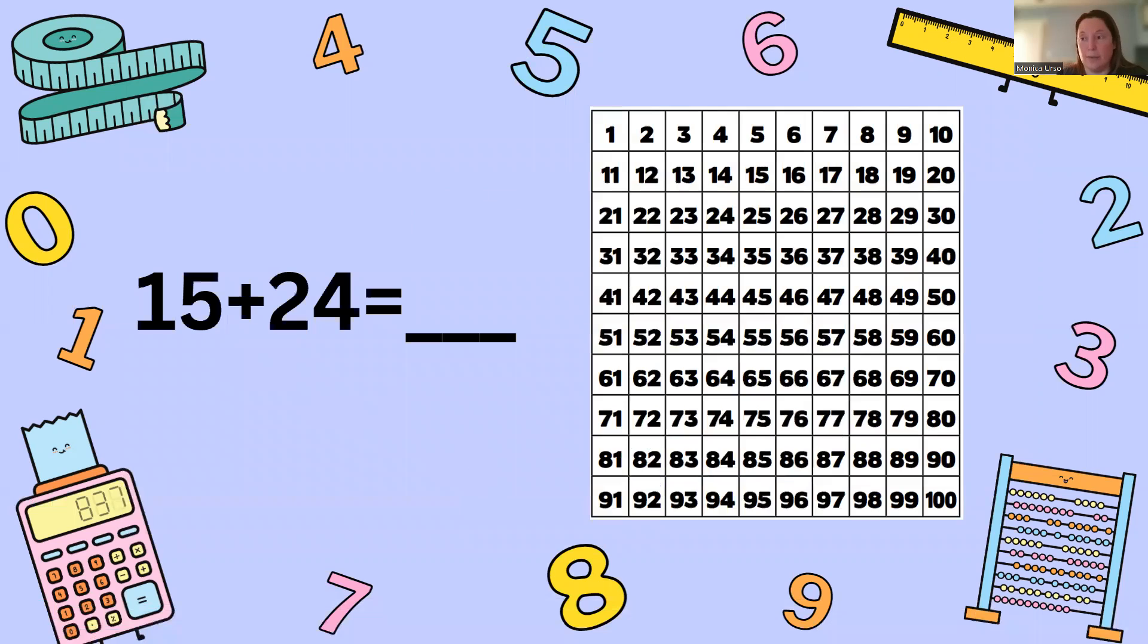For our next example we're going to find 15 plus 24. So for this we're going to start with 15, we're going to add 20 and then we're going to add 4.